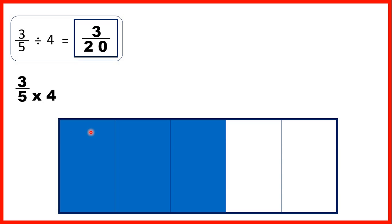So if we shade 1 quarter of what were our 3 fifths in red, you can see that our fraction bar is now split into 20 pieces altogether—that's our denominator—and 3 of those pieces are red, so that's our numerator.